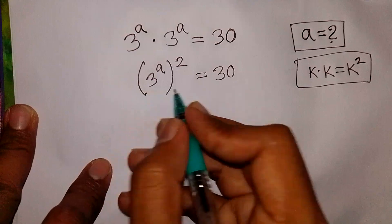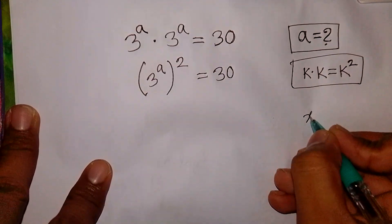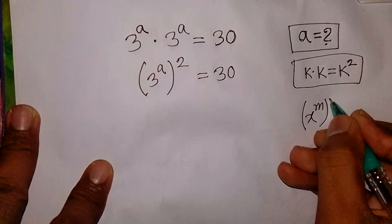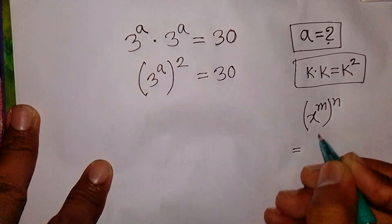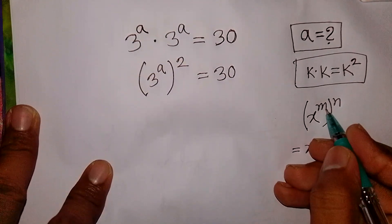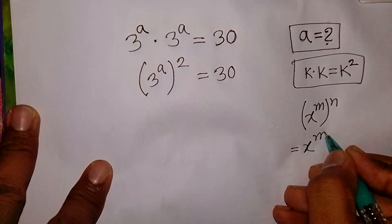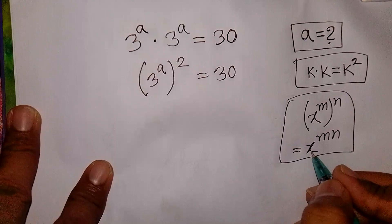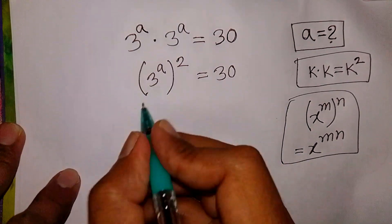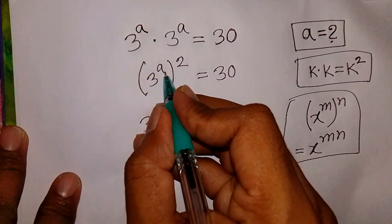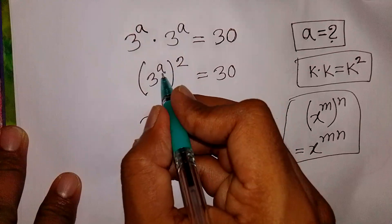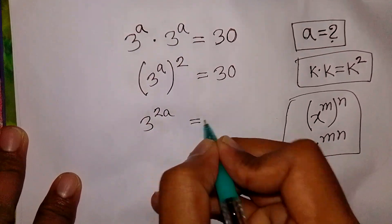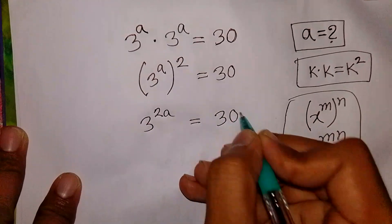Now, here we can apply the exponential rule that X power M, bracket power N, is equal to X power of M times N. So it will be MN. This exponential rule applies here, so it will be 3 power of 2 times A, that means 3 power 2A is equal to 30.